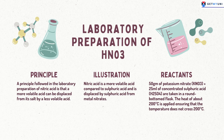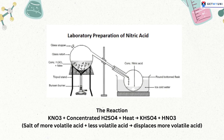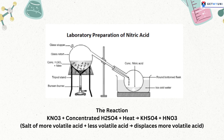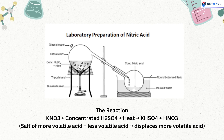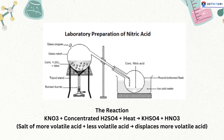The reactants — 50 grams of potassium nitrate plus 25 milliliters of concentrated sulfuric acid — are taken in a round-bottomed flask. Heat of about 200°C is applied, ensuring that the temperature does not cross 200°C. The reaction is: KNO₃ + concentrated H₂SO₄ + heat → KHSO₄ + HNO₃. Lastly, the vapors of nitric acid are cooled and condensed for collection, as demonstrated in the diagram.